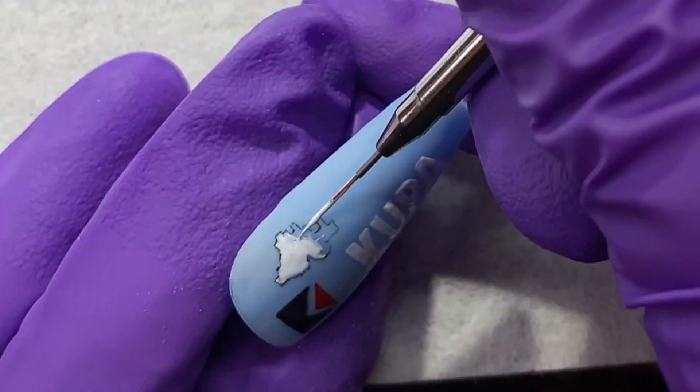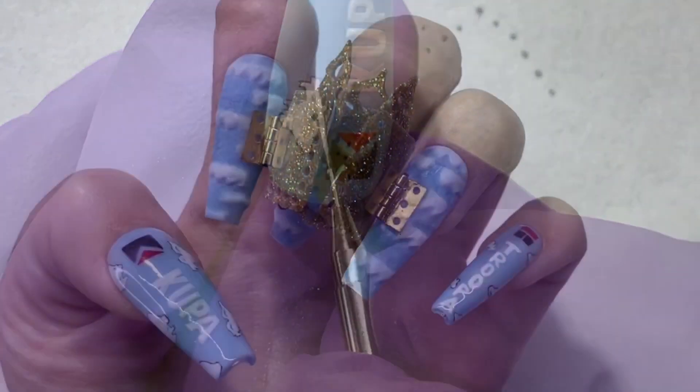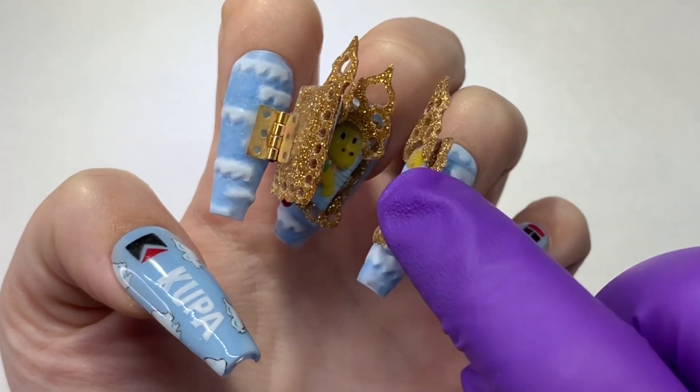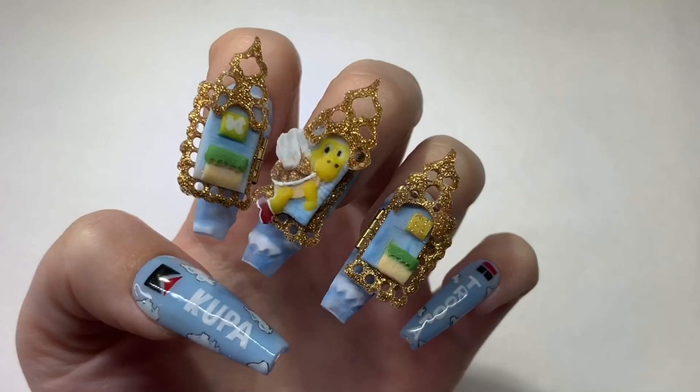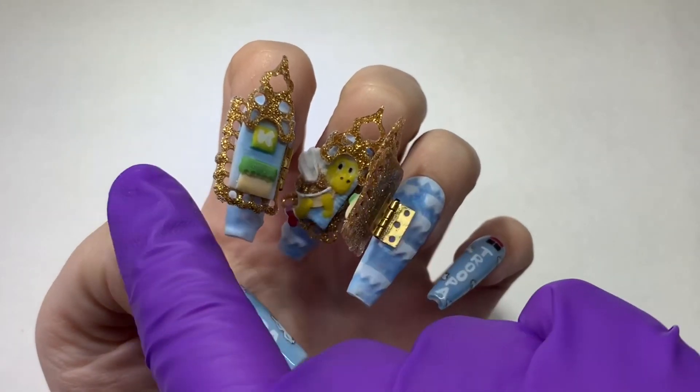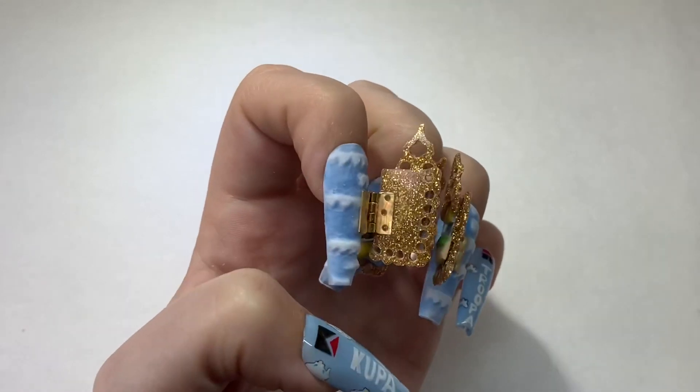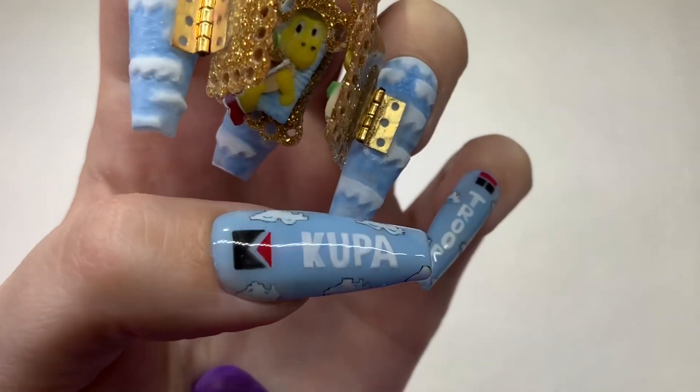Then we're going to make these little 8-bit clouds, they're so cute. Make sure that there's a very thin amount of paint on your brush so you can make that super thin line, and then fill them in with white.